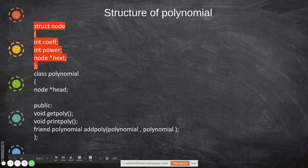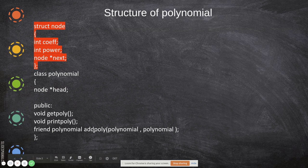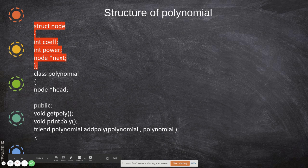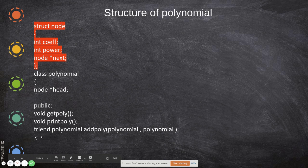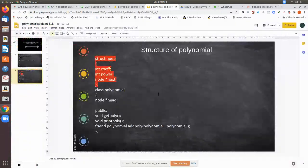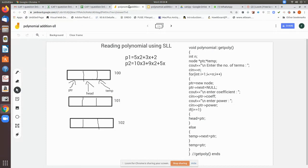The member functions we use are getPoly, printPoly, and addPoly. Using getPoly, we get the polynomials to be added. Using printPoly, we print the value of the expression. Using addPoly, we pass the two polynomials received as input through getPoly, and this returns the answer to the main program.